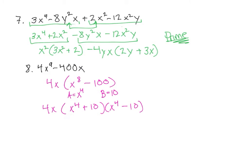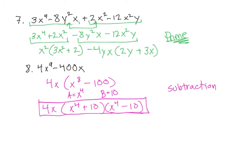Now, if that 10 was a perfect square, we could factor this one further. But because it is not a perfect square, we are done with the problem. In order for something to be factored further using the difference of the squares, you must have a subtraction and both must be a perfect square. We do have the subtraction, and x to the 4th is a perfect square, but 10 is not.